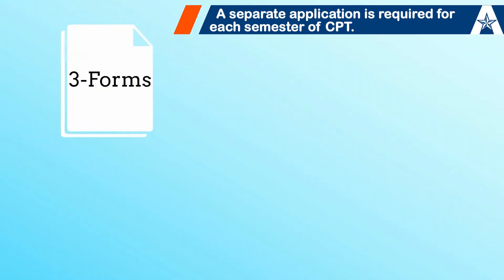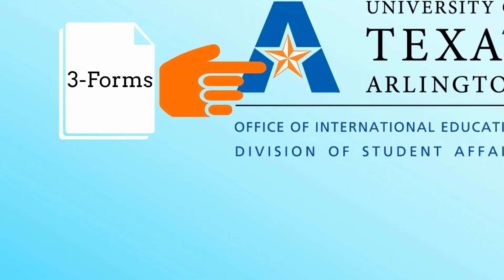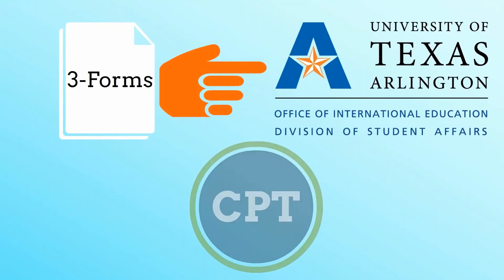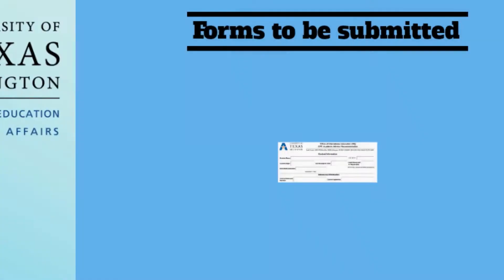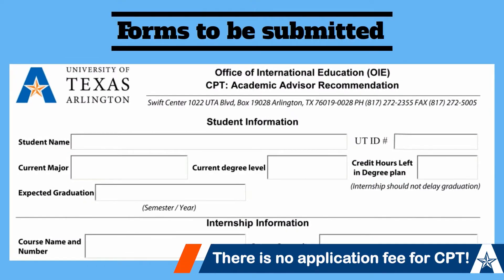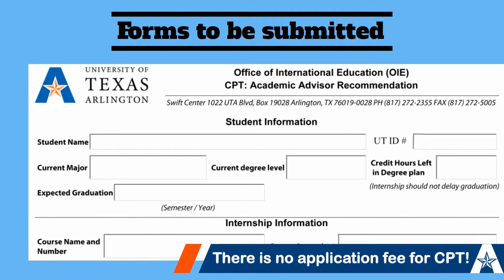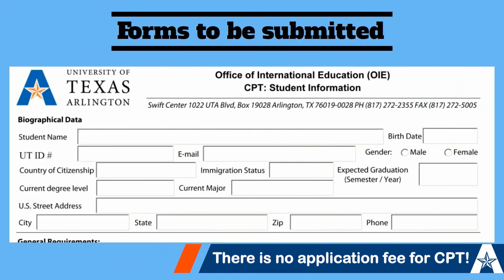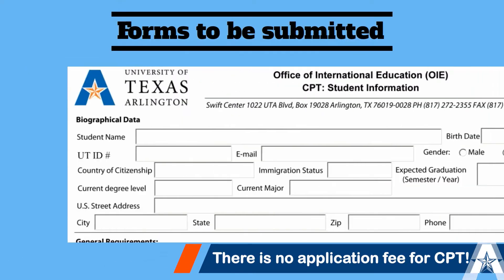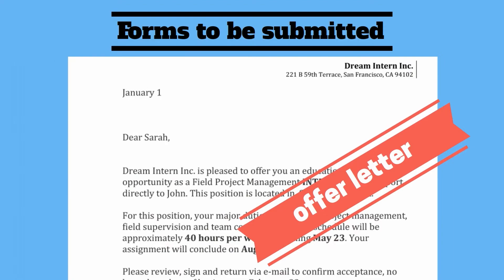There are three things you should submit to OIE to be approved for CPT: a recommendation from your academic advisor, the CPT student form, and a copy of your offer letter.